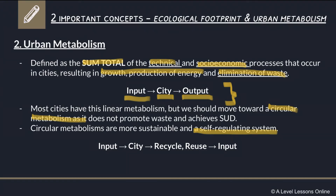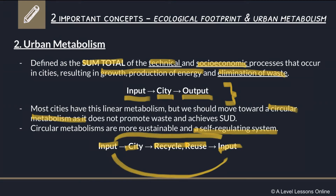In a circular metabolism, the city takes its input and uses it, then recycles or reuses it so it can be churned out as input again. This means there is no output — any resources that come in are constantly being recycled and reused, so no waste is actually produced. That's why a circular metabolism is like a circle: it starts with input and ends with input as well.